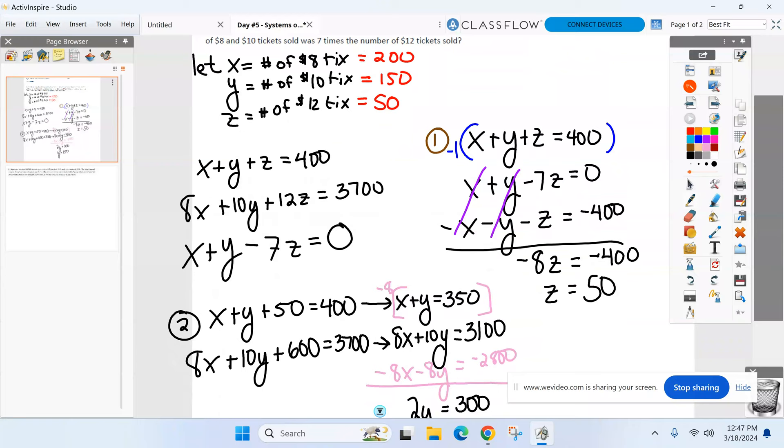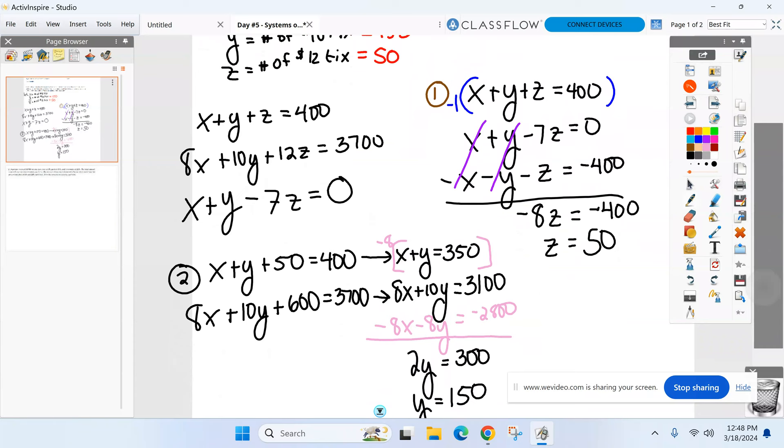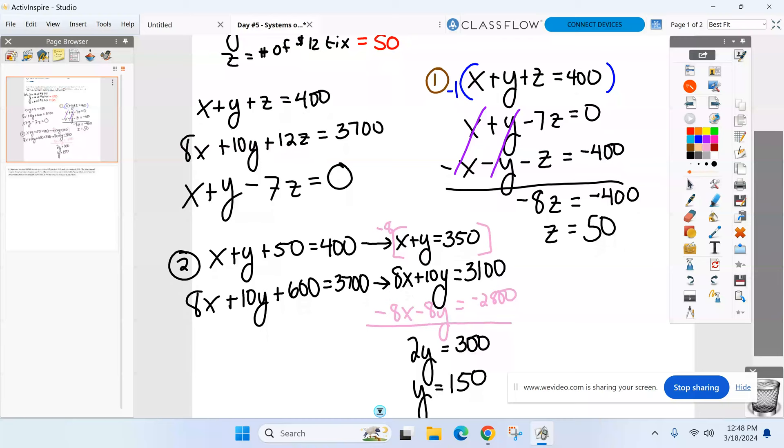Anything here? Anything we want to go over? Because this last problem we do, you're not going to get lucky. It won't cancel two variables out. So what the heck do I do then if I don't cancel two? All righty. Buckle up for this one.